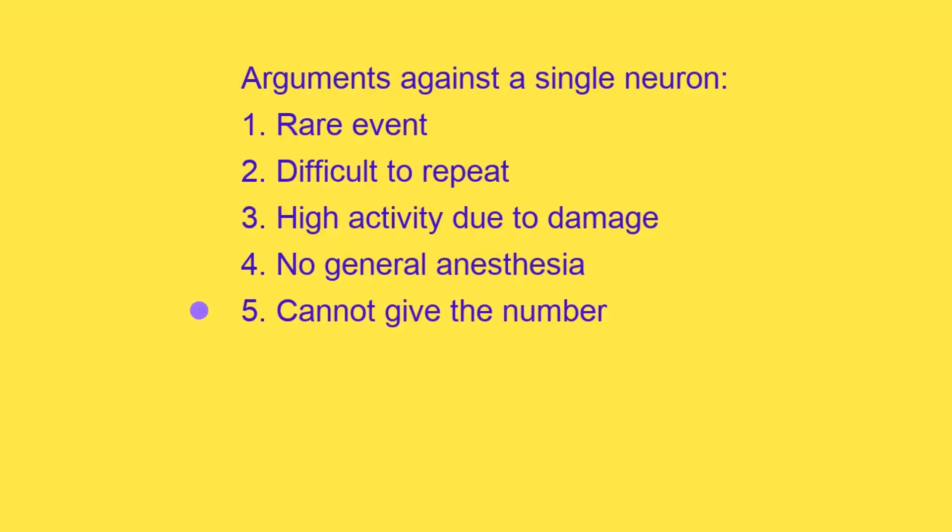The fifth argument against single neurons is that the recordings cannot give the number of highly active columns. It is an unrealistic project to have such a vast number of electrodes that they could record the activity separately in all columns.